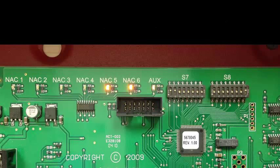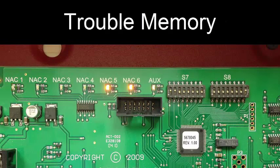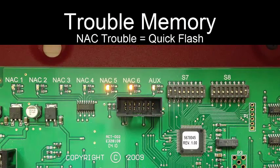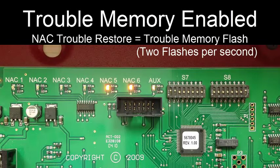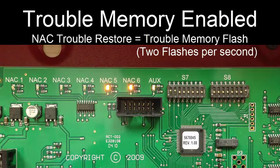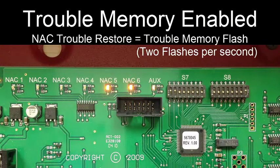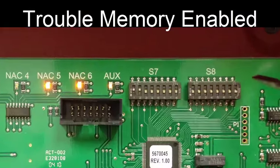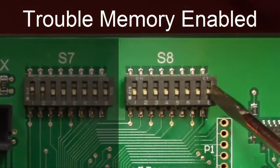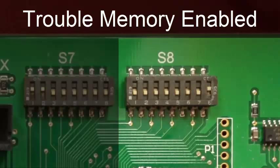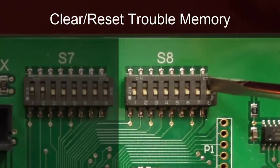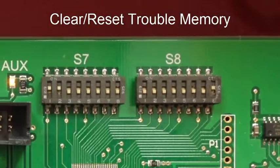Another feature of the NAC LED is trouble memory. If a NAC goes into trouble, the LED of that NAC blinks quickly. When the trouble restores, if the trouble memory feature is enabled, the LED for that NAC will begin issuing the trouble memory flash, which indicates that a trouble existed previously but is no longer present. The trouble memory indication consists of two short flashes issued once per second as seen here. To enable trouble memory, simply set DIP switch 8 of switch 8 to the on position. To clear or reset the trouble memory, set the trouble memory DIP switch to the off position, and then back on to enable the feature again.